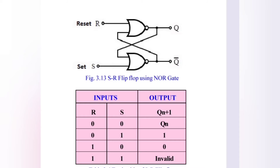When reset is 0 and set is 1, Q is 1 and Q-bar is 0. When set is 1, the output is 1. When R is 0, reset is 0.